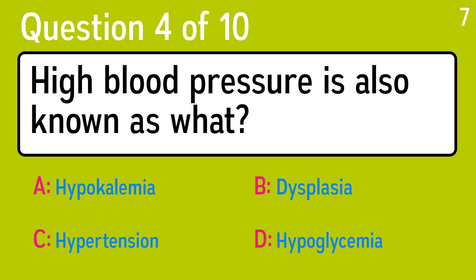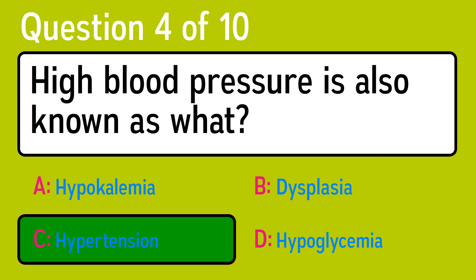Question 4: high blood pressure is also known as what? The correct answer is C, hypertension.